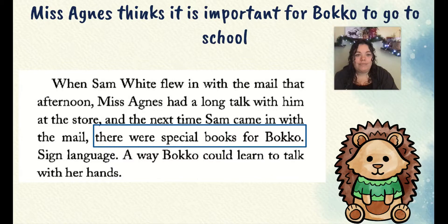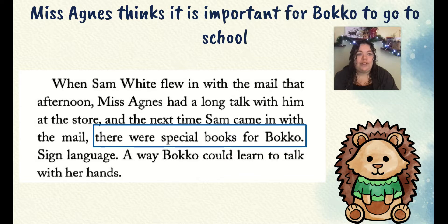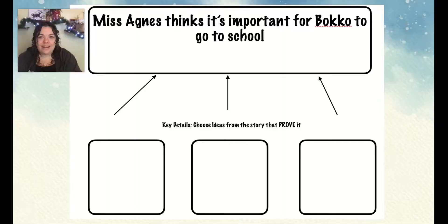Pause me again and read this section. In this section, you can see that there were special books for Boko when Sam flew back with the mail — Miss Agnes had ordered special books for Boko. So I can show Miss Agnes thinks it's important for Boko to go to school because she ordered special books for her.